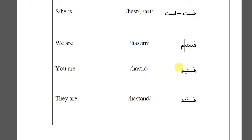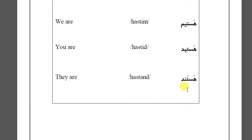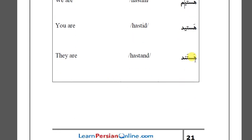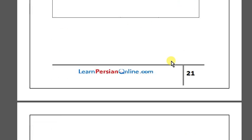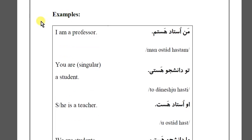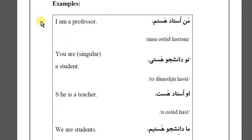The next one is hastid — hastid means 'you are,' but it is plural. The next one is hastand — with -and at the end, which is for 'they.' So hastand means 'they are.'